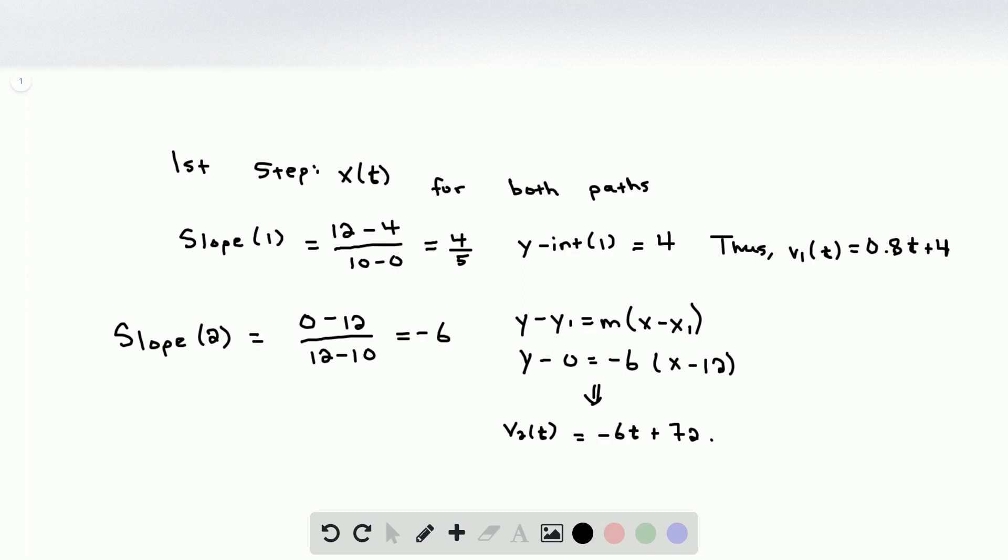So now that we have the two equations for v, we can start to actually solve the problem. We're going to want to get x1 of t. And we do this by integrating v1 of t. And so I'm just going to pull the 0.8 out of the integral. And then we also have the other part, which is just a constant of 4, but we still have to integrate it. And when we do this out, we get 0.8 t squared over 2, just doing the reverse power law, plus 4t.